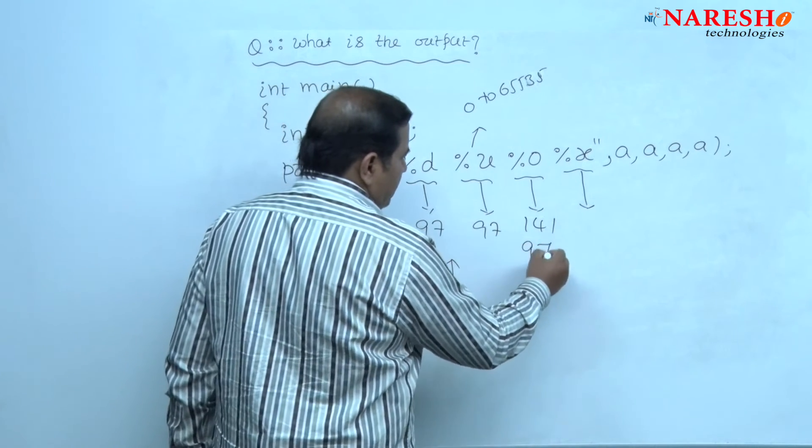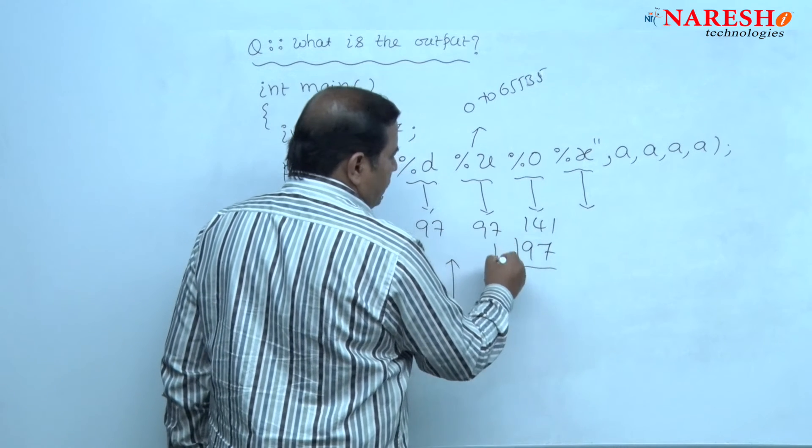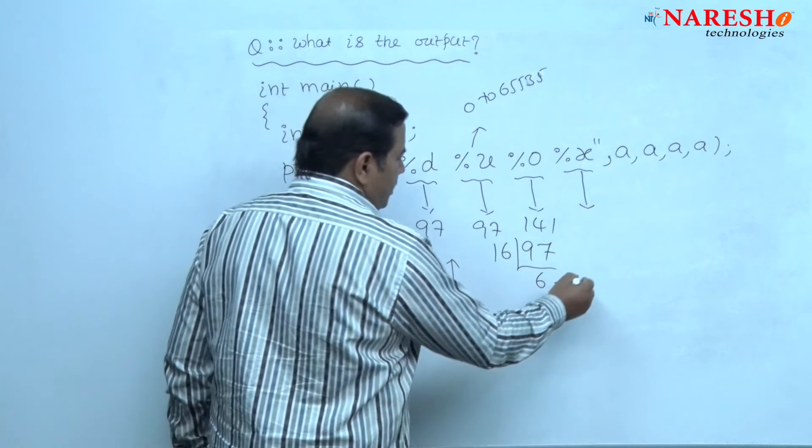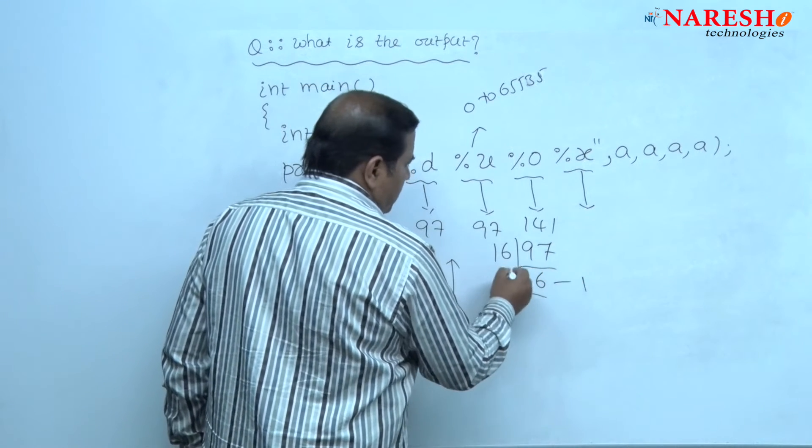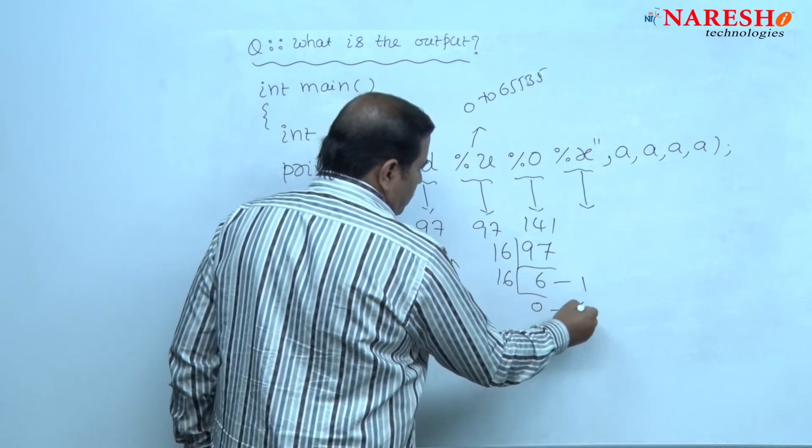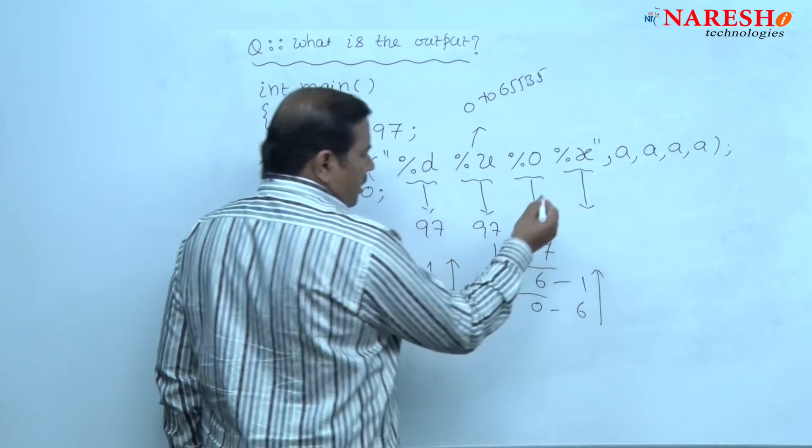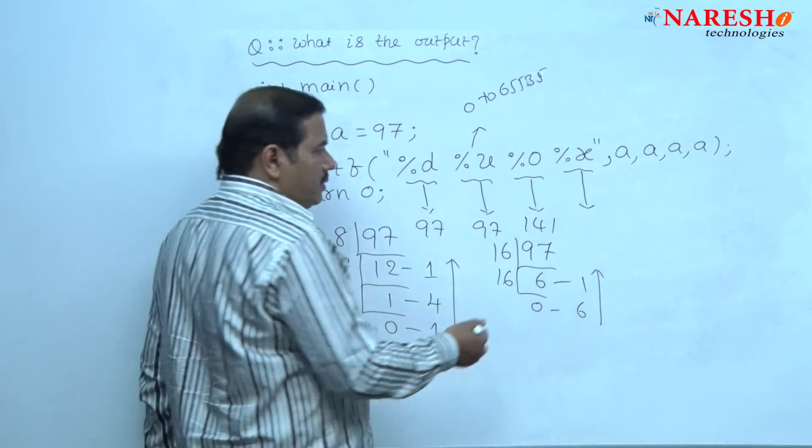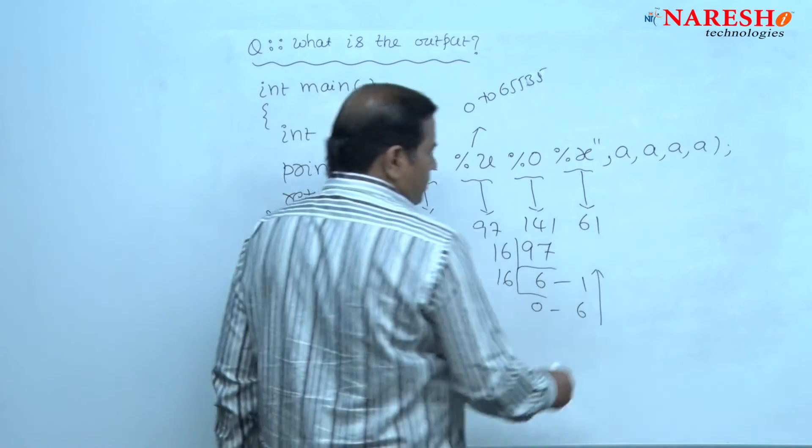16 times 6 is 96, remainder is 1. 16 times 0 is 0, remainder is 6. Write down these remainders and list them from bottom to top. We will get the number 61.